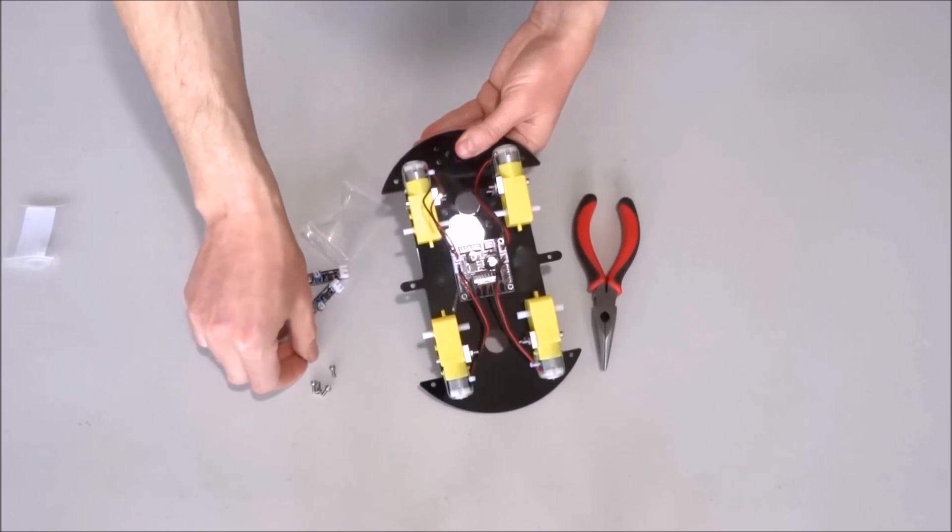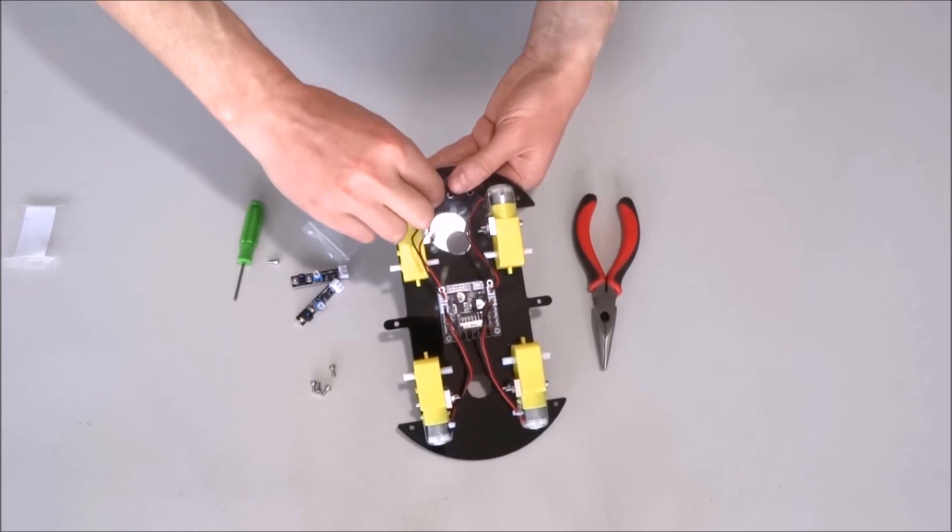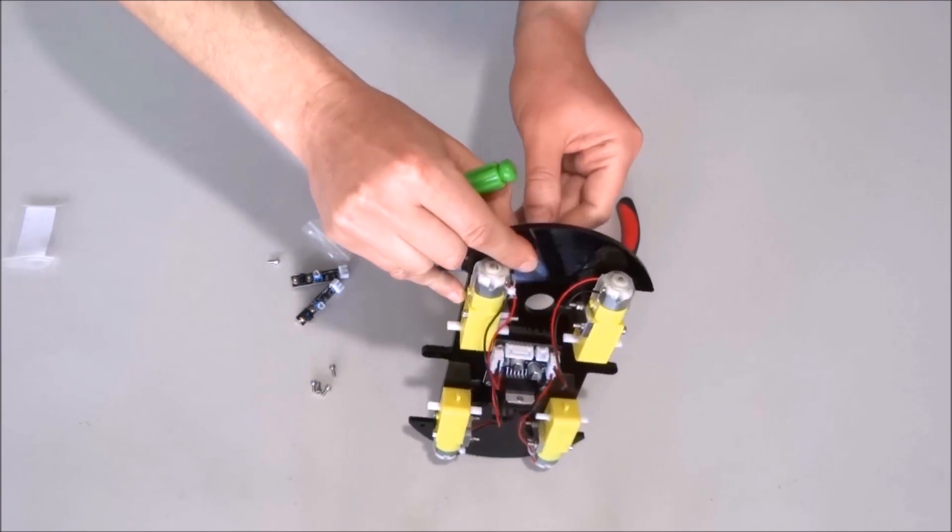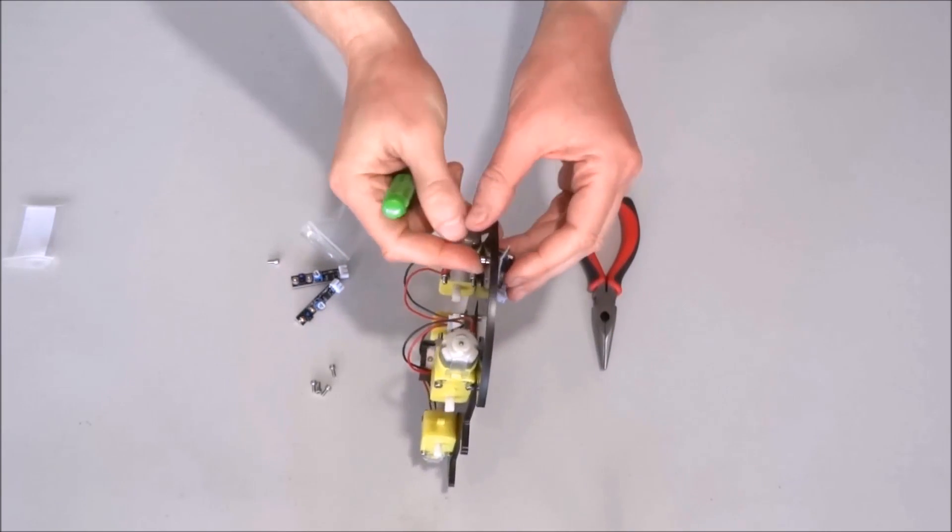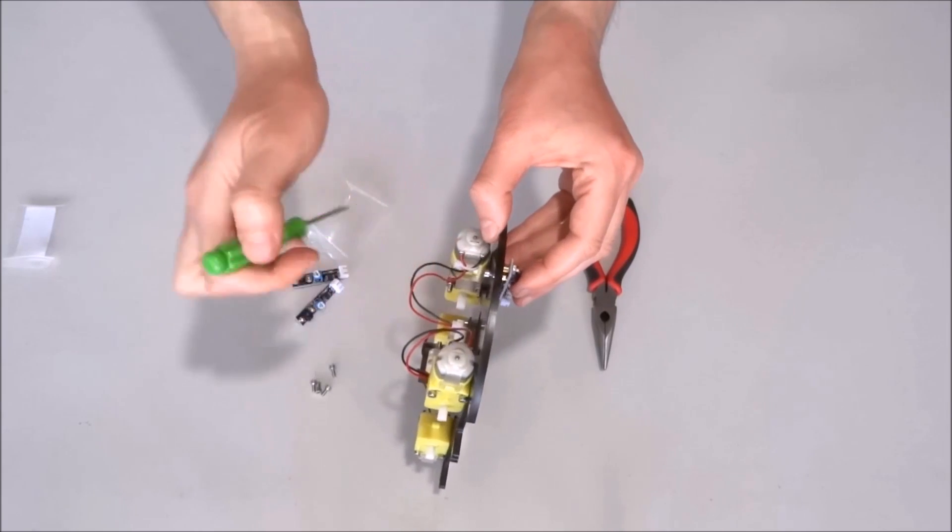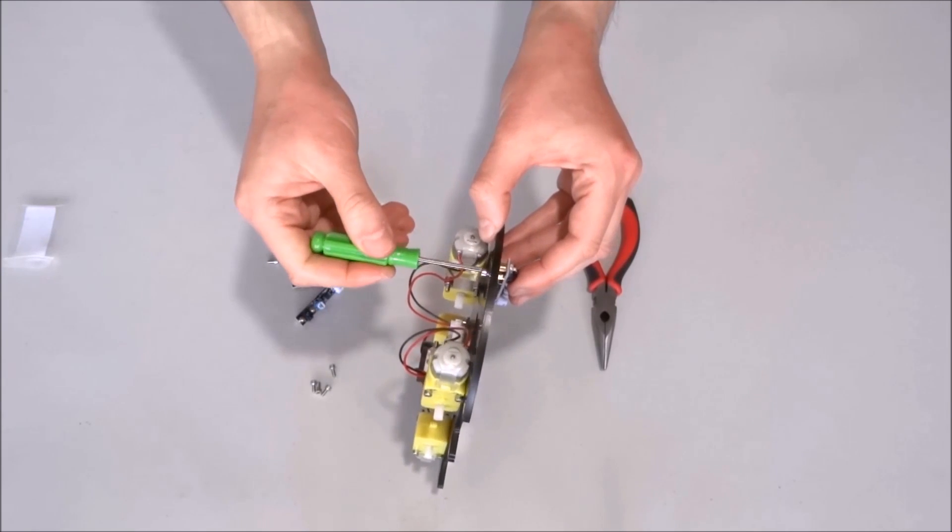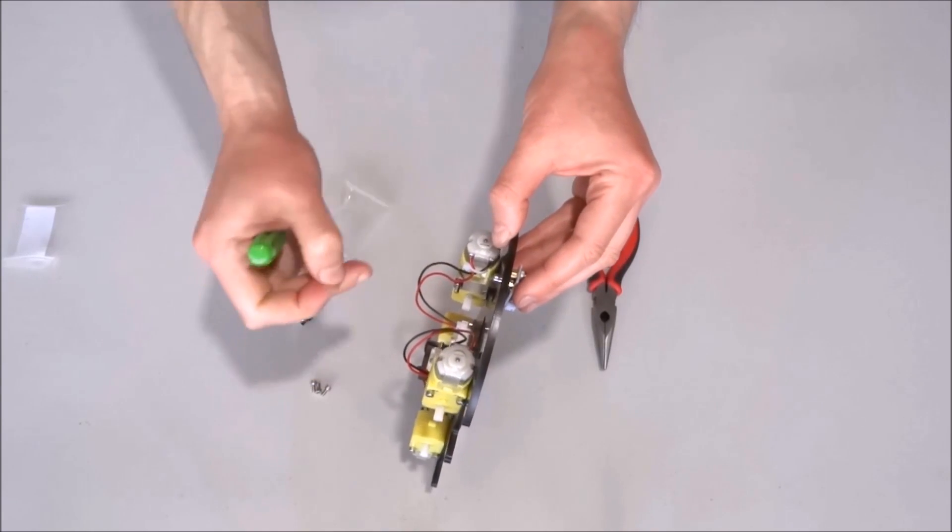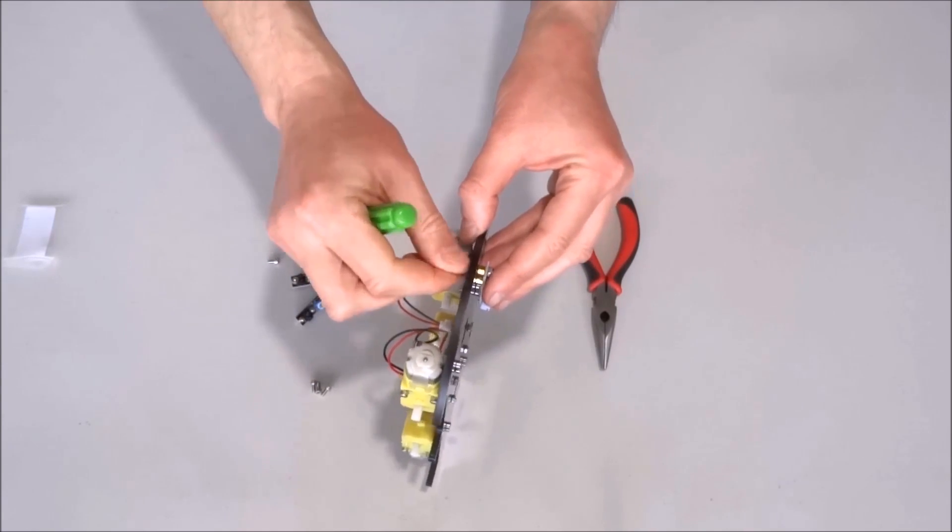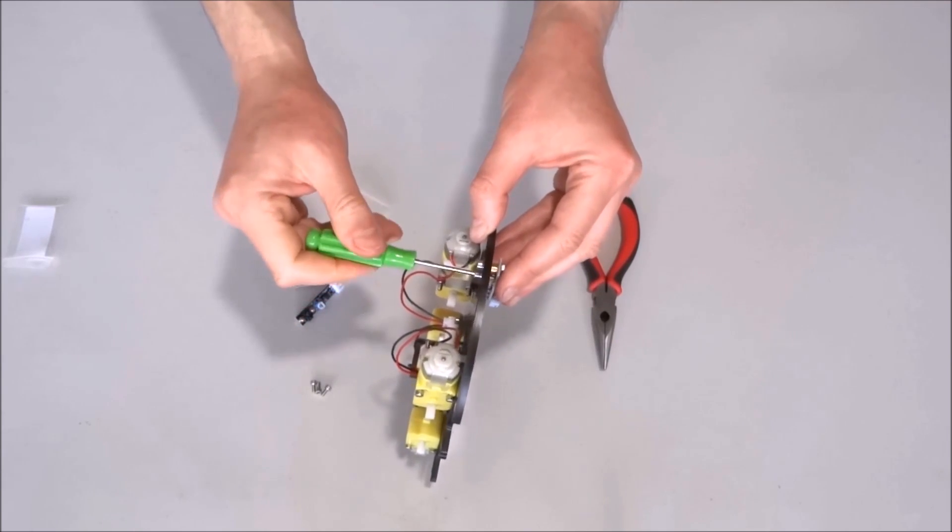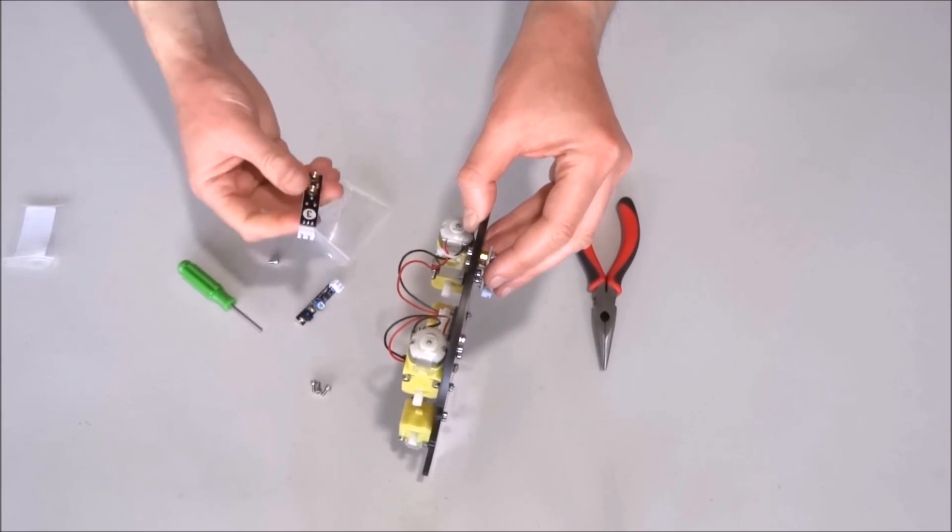And we'll use screws from the top to mount it. The first screw, leave it loose so we can adjust the second screw. And the second screw. This was sensor number one.